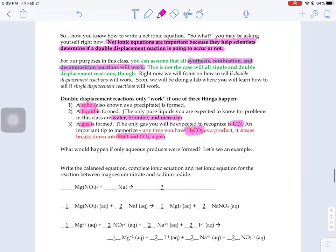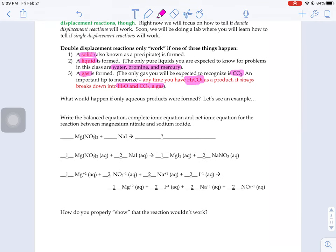So if we did a reaction between magnesium nitrate and sodium iodide, we'd have to figure out the products. Magnesium would go with the iodide, sodium would go with the nitrate. We'd have to balance out our charges, balance the reaction overall, and then use our solubility chart to determine the states of matter.